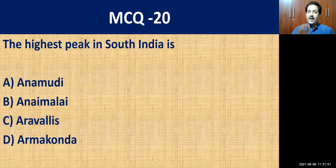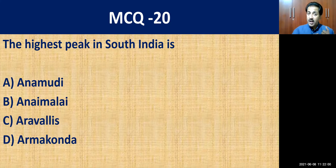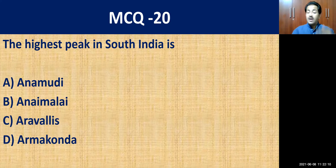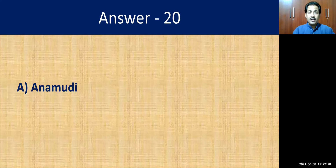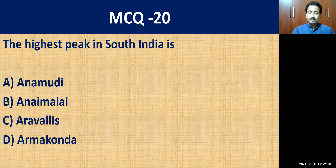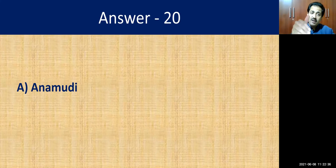MCQ question number twenty: the highest peak in South India — very important. The options are Anamudi, Annamalai, Aravallis, or Armakonda. Armakonda is in the eastern north and Aravalli is in the northwestern part. Annamalai is a range in Tamil Nadu. The correct answer is Annamalai — the highest peak in South India is in the Annamalai range.